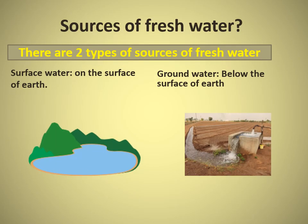Sources of fresh water: There are two types of sources of fresh water — surface water and ground water.